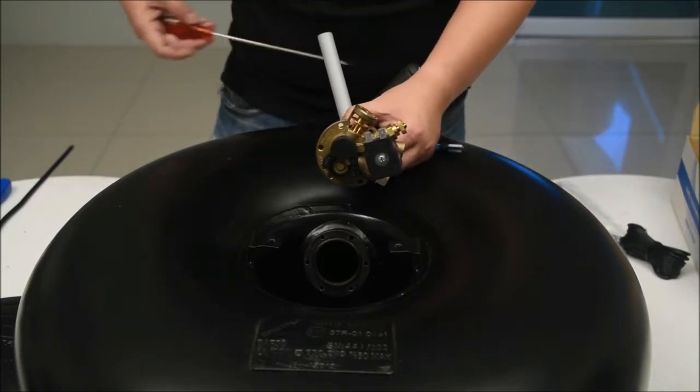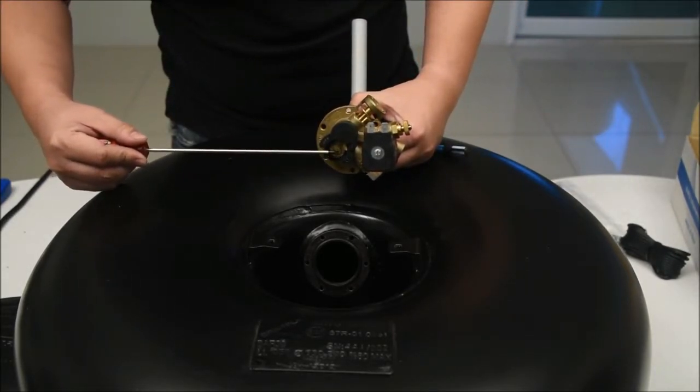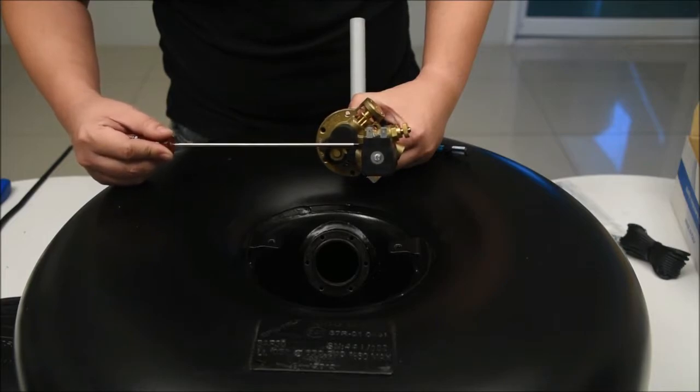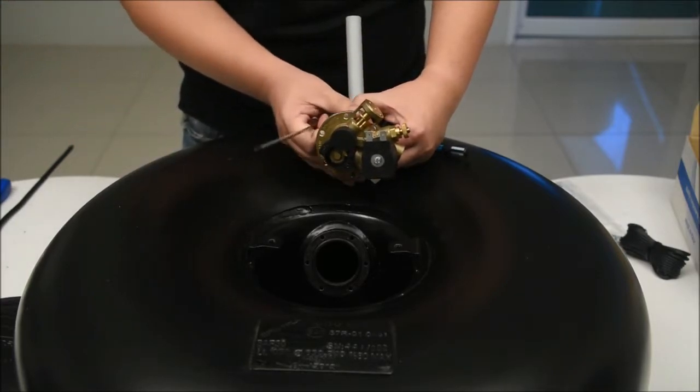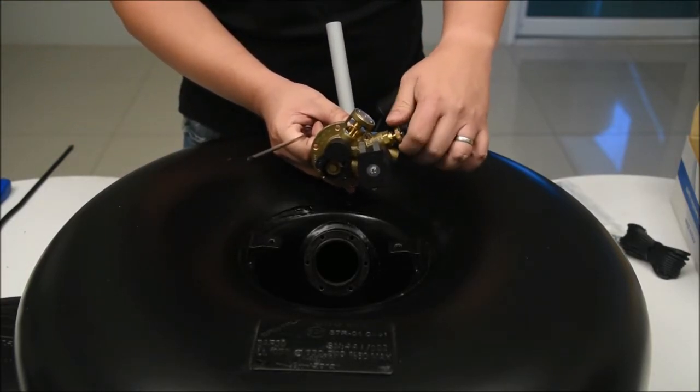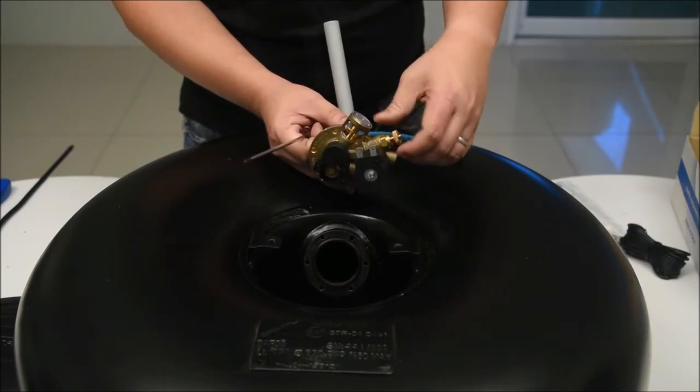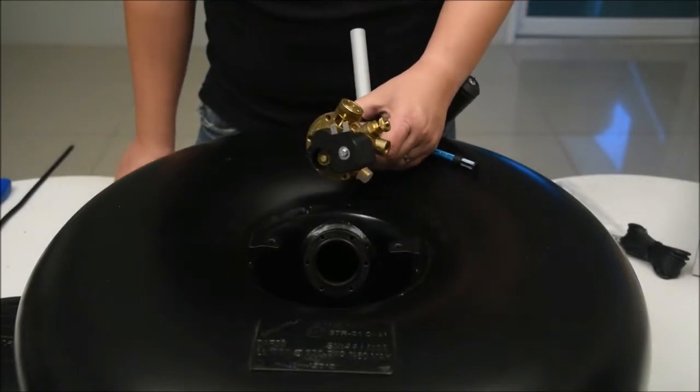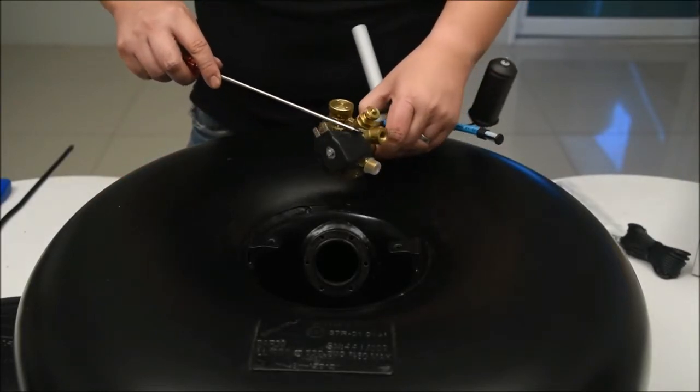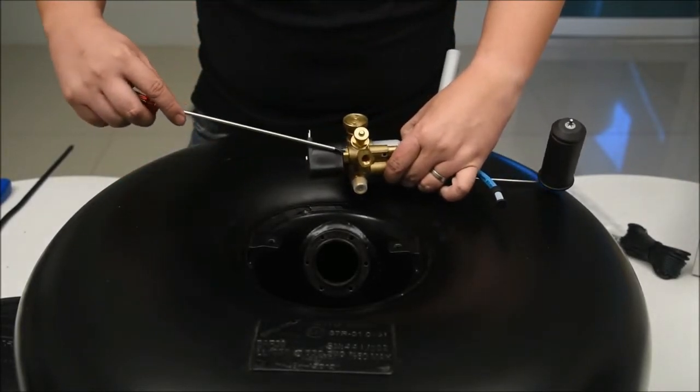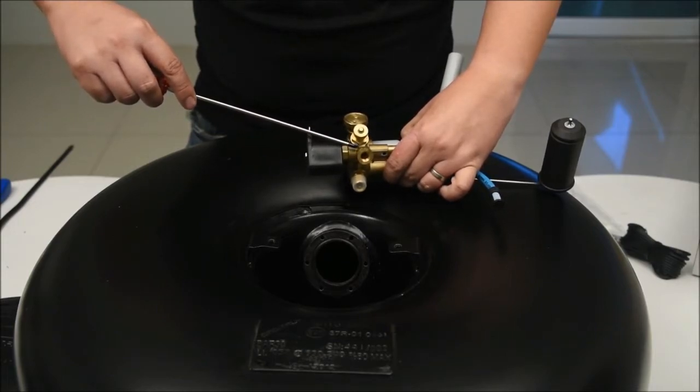This place is where to install the level indicator. This black coil is the automatic valve. This one is a manual valve in order to open and stop LPG flow when service or emergency case. This one is LPG outlet and nearby there is LPG filling inlet.